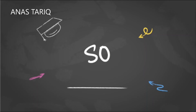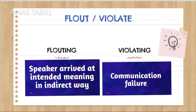Maxim violation involves some element of communication failure. When you violate maxims, the communication breaks down. This is mainly because of providing too much or too little information, or ambiguous information about the topic. So little information, too much information, or ambiguous information leads to violation of maxims.